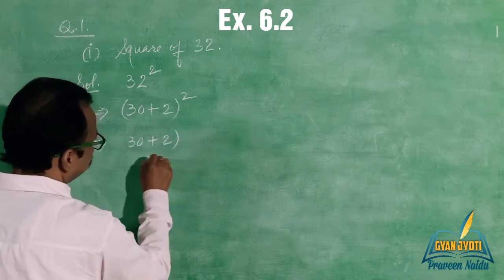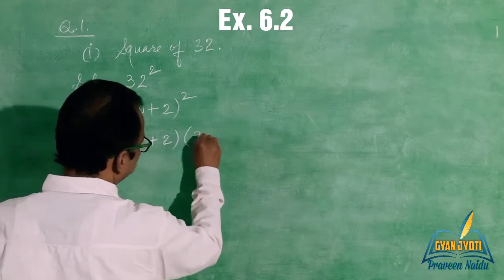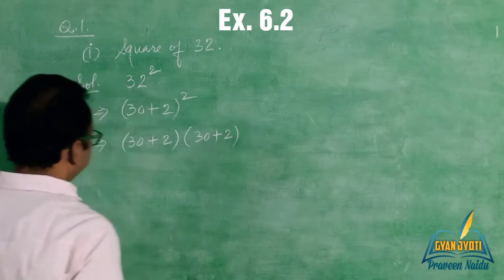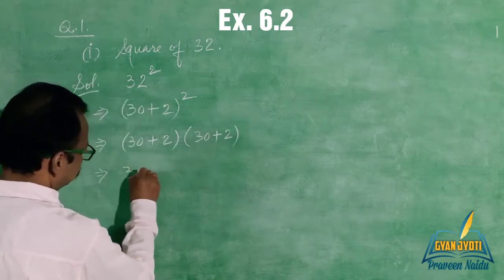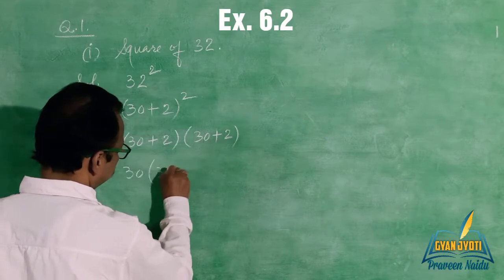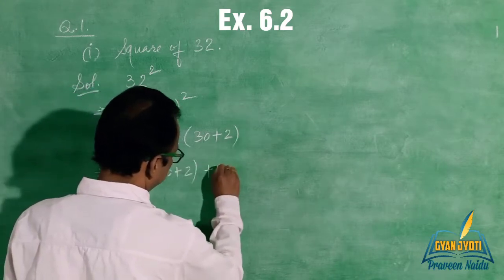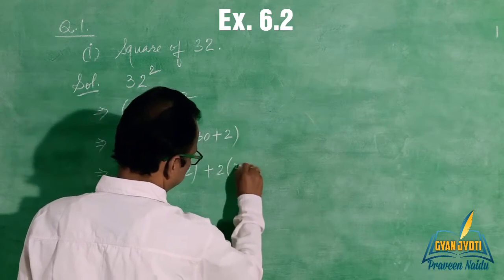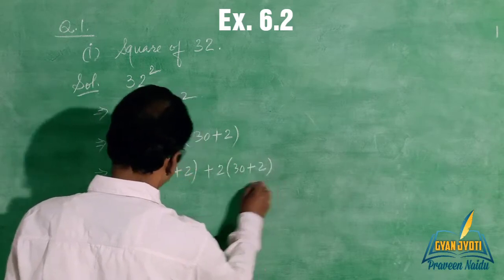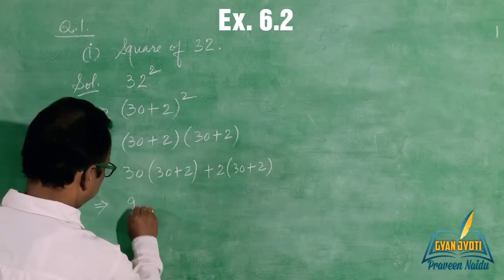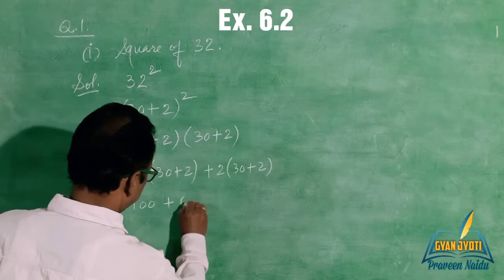32² equals (30 + 2) whole squared. That means (30 + 2) times (30 + 2). Now, using distributive multiplication.